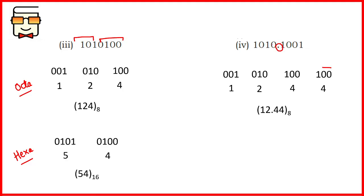Coming to the left side of the point, you start grouping from right to left. You create two groups: one is 001 by adding two zeros at the beginning, and the other is 010. Your final answer is 12.044 in the octal number system. Don't forget to write this particular point here.